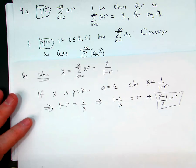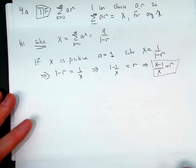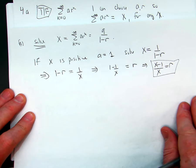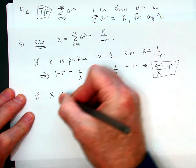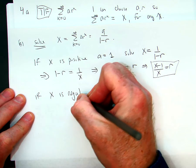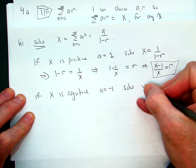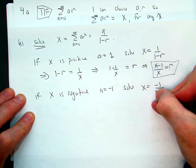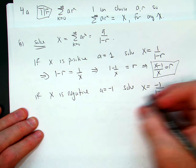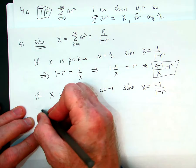Well, if x is negative, I do something similar. I'm going to set a equals minus one. I'm going to solve x equals minus one over one minus r. And I get something similar. I move, I cross multiply.